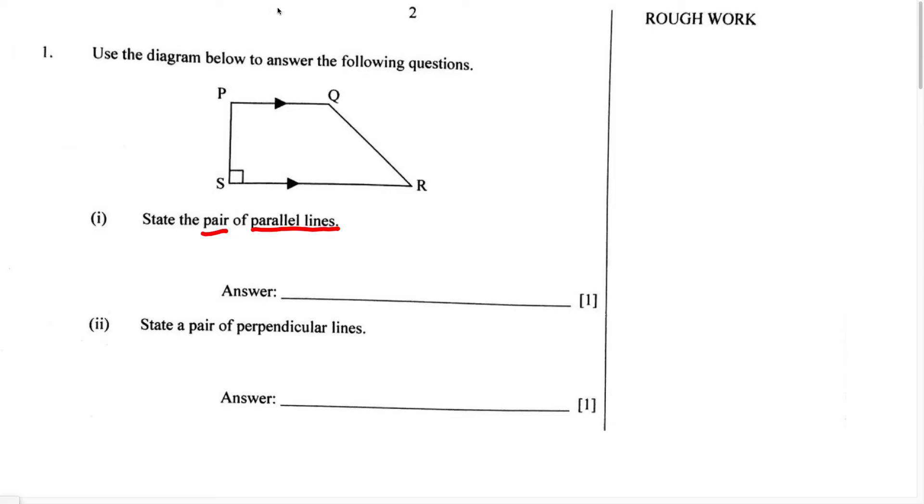If we look at this, which two lines are going to be parallel? Exactly. We can see line PQ and line SR are going to be the pair of parallel lines. Therefore, we can just write this as PQ and SR.